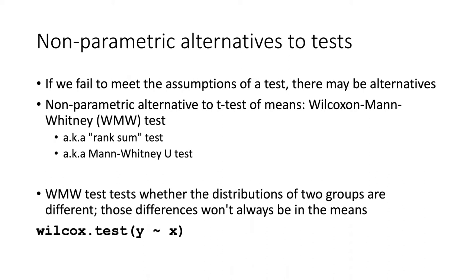In the case of our data, it was a bit sketchy because our blue data, even with the transformation, wasn't exactly normal — it was still significantly different from normal. So if we don't feel comfortable with that, we can use a non-parametric alternative. The non-parametric alternative to the t-test of means is the Wilcoxon rank sum test, also sometimes known as the Mann-Whitney-U test. Those two names are combined in the name Wilcoxon-Mann-Whitney, or WMW test.